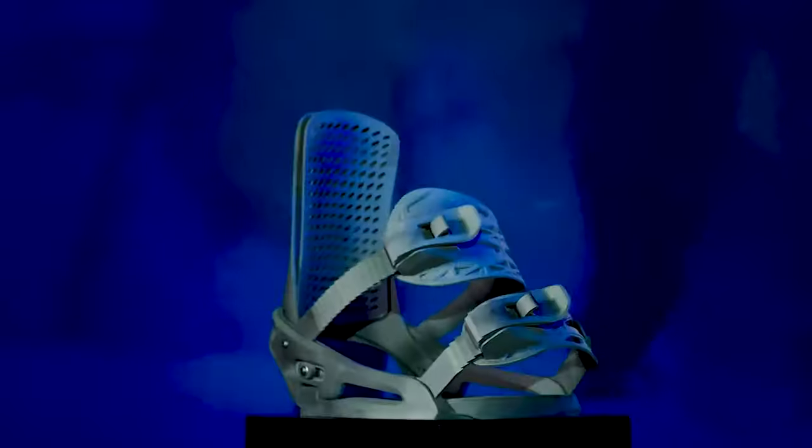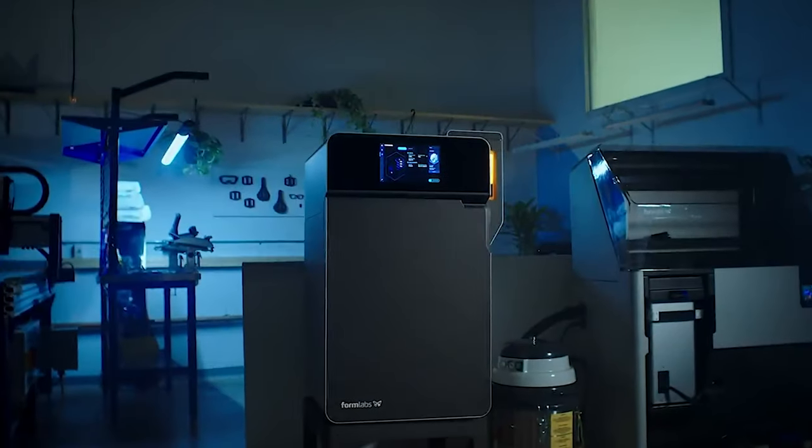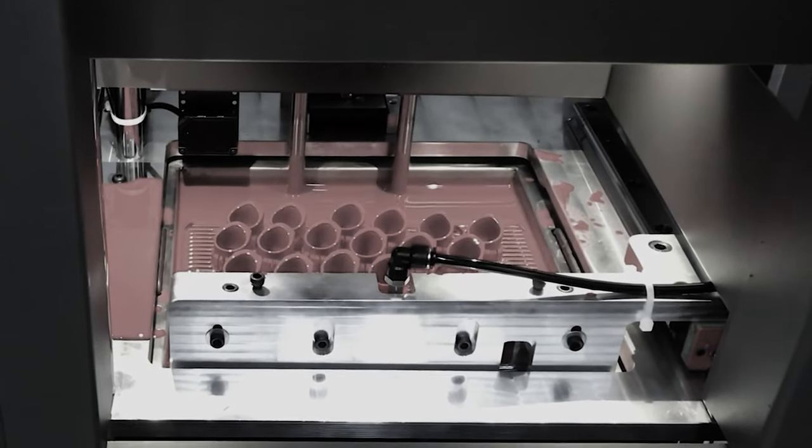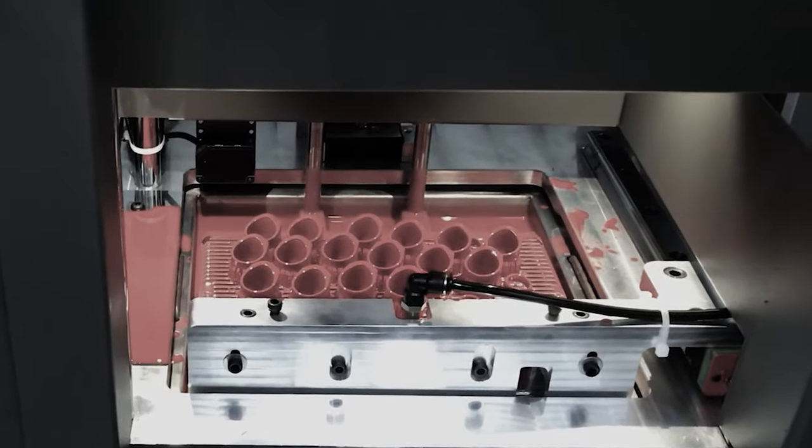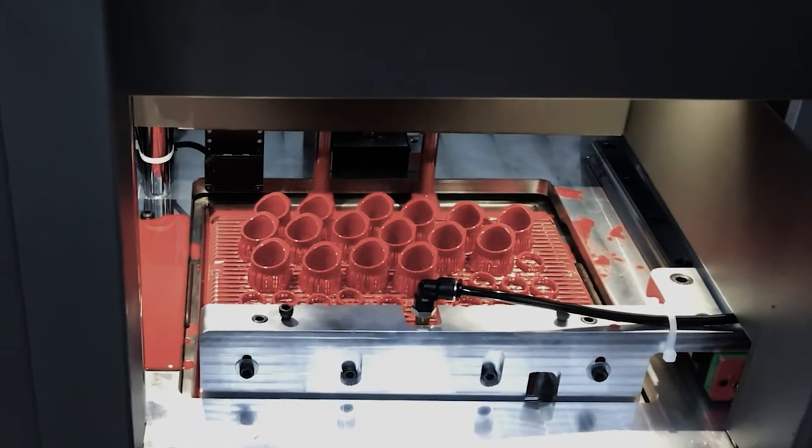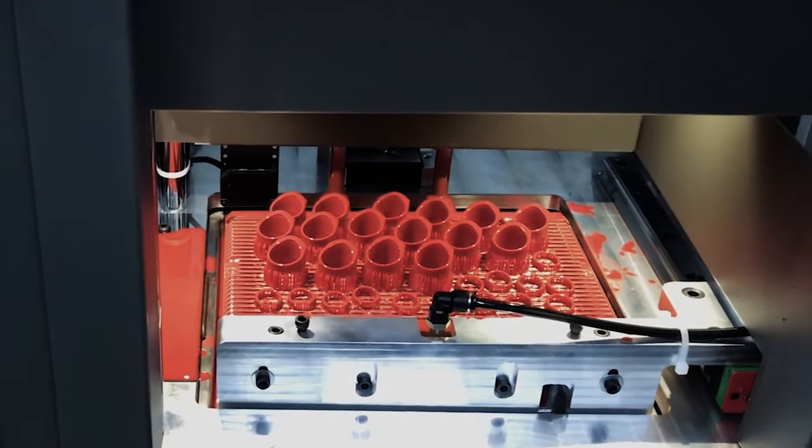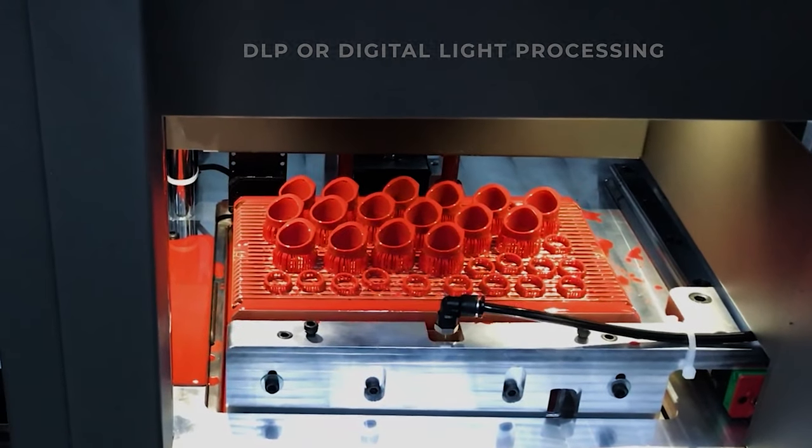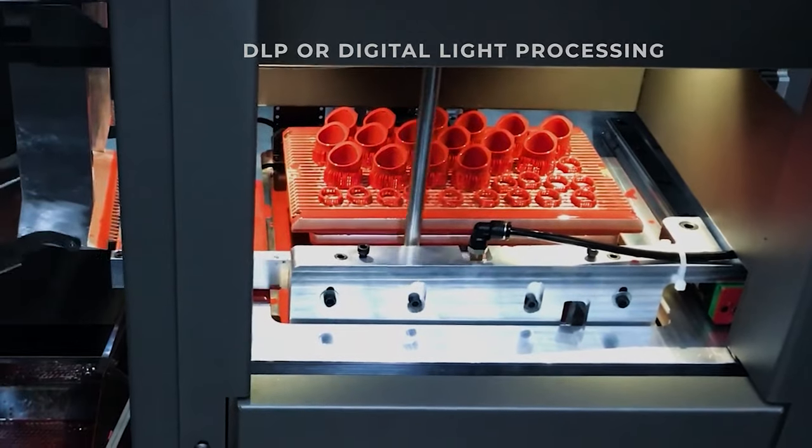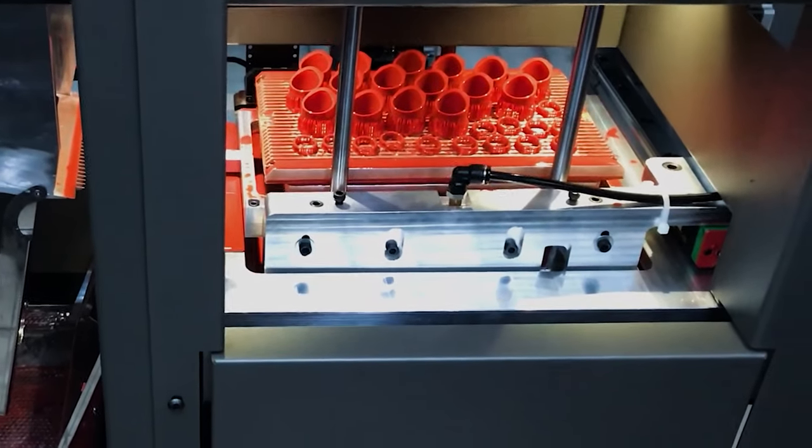However, other companies were also doing research and development. Some companies realized that using a laser as a light source for illuminating a photopolymer resin was not the only solution. They experimented with another way of forming a model. This method was named DLP, or Digital Light Processing.